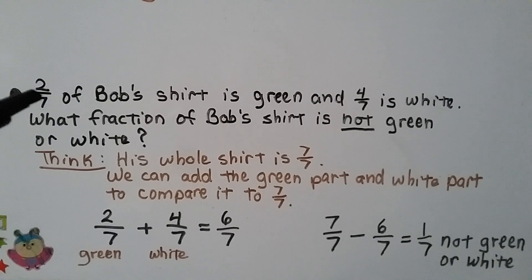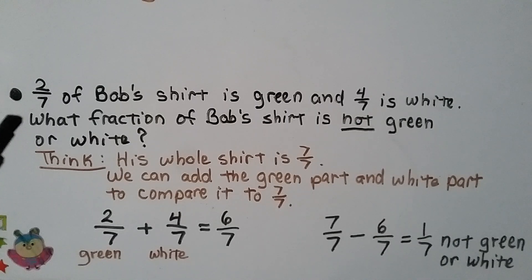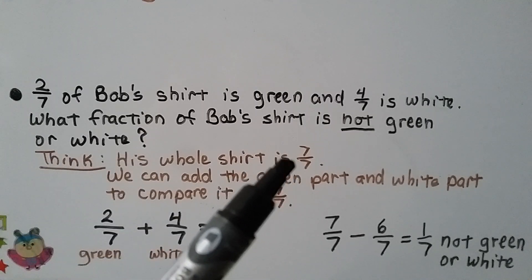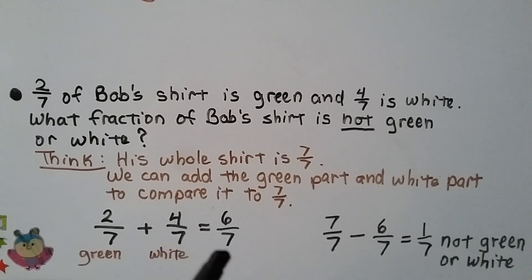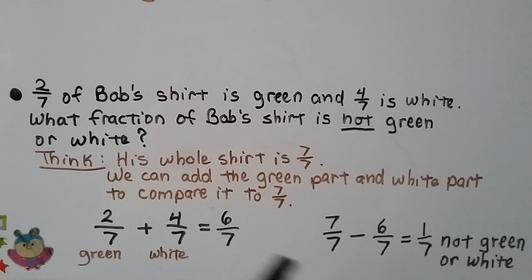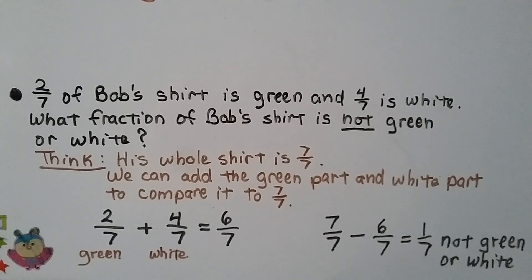2/7 of Bob's shirt is green and 4/7 is white. What fraction of Bob's shirt is not green or white? His whole shirt is 7/7, which equals 1 whole shirt. We add the green and white parts: 2/7 + 4/7. We have the same denominator, so we add the numerators: 2 + 4 = 6. So 6/7 of the shirt is green or white. The whole shirt is 7/7, so we subtract: 7/7 − 6/7 = 1/7. Therefore, 1/7 of Bob's shirt is not green or white.